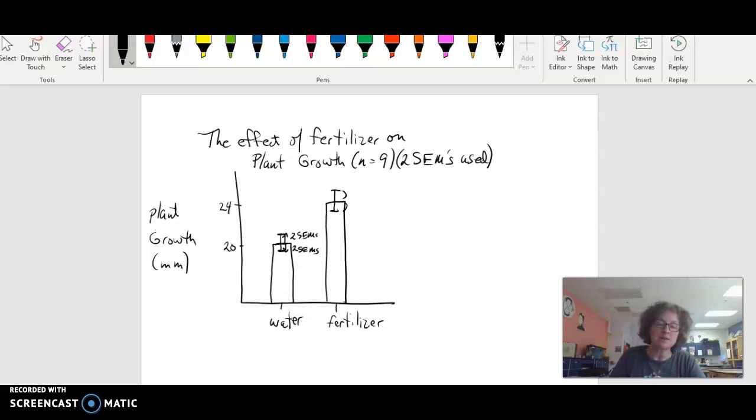So if you had nine plants that were measured after they were given water, that was a control. And the average is this line here. The average that you calculated of those nine plants and how much they grew was around 20 millimeters. Just like the average for those that were treated, the nine plants that were treated with fertilizer was around 24. So if you didn't have the error bars, you could simply say, well, it definitely looks like the fertilized plants grew more by four millimeters than the watered plants did.